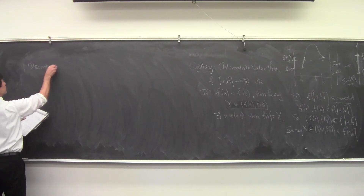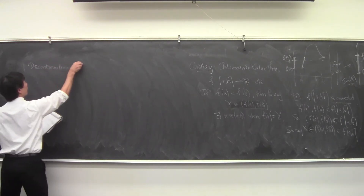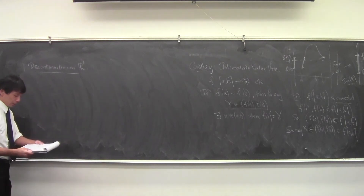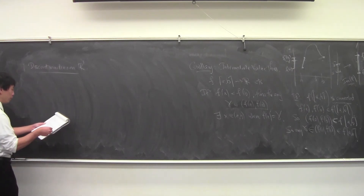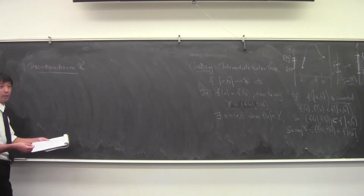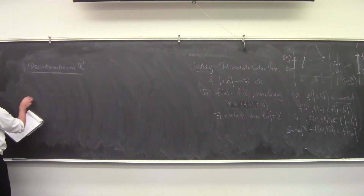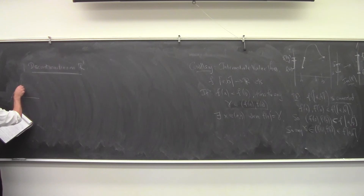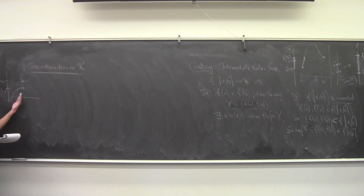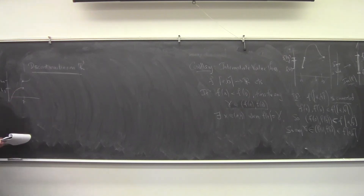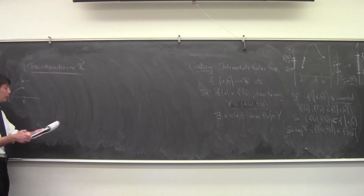Discontinuities on R¹. This is formalizing things you've seen before — right-handed limits, left-handed limits. Maybe you've seen these in calculus: a function has a different limit from the left than from the right. You've got some L₁ and some L₂; the limit from the left-hand side is L₁, and the limit from the right-hand side as you approach point P is L₂. We're going to write this down in neighborhood notation.